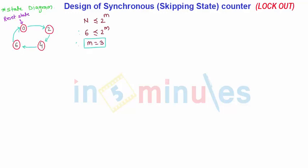So we will follow the same example in which we will try to discover what is the lockout condition and what are the remedies to prevent or avoid the lockout condition in the skipping state counter. Let us go to the same example that we have studied. Here the state diagram is given which is having skipping states.